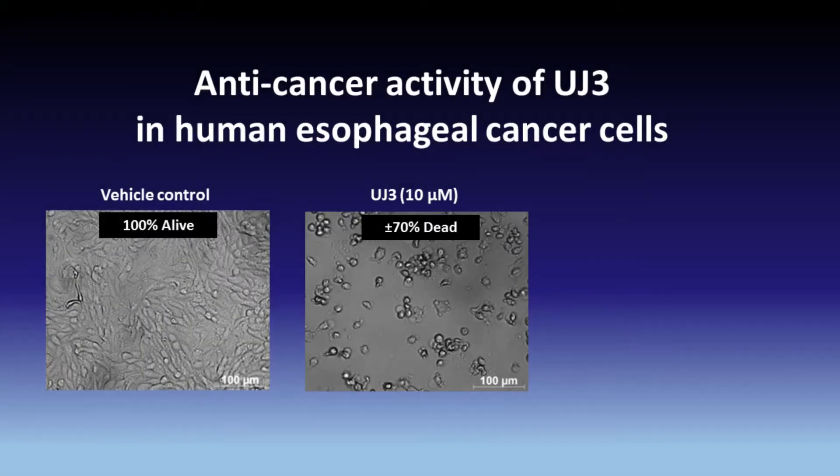In the middle, we see cancer cells dying after treatment with 10 micromolar UJ3. By measuring the metabolic activity of the cells, we see that 70% of the cancer cells are dead.